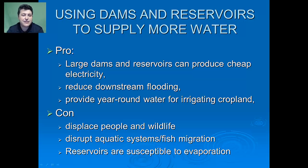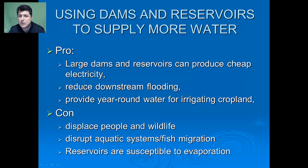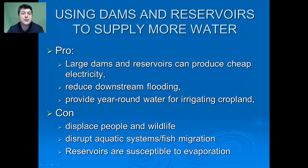Some negatives: when you produce dams and create a reservoir, you're flooding land that wasn't previously covered by water, potentially displacing people and wildlife. You're disrupting a natural stream or river, so aquatic systems — like fish migrating from the sea to their nesting grounds — will be disrupted. And reservoirs, especially in hot summer months, see a lot of evaporation, wasting much of that water.